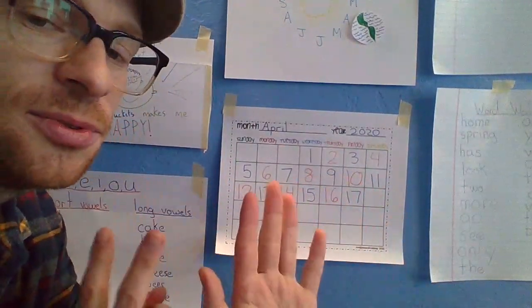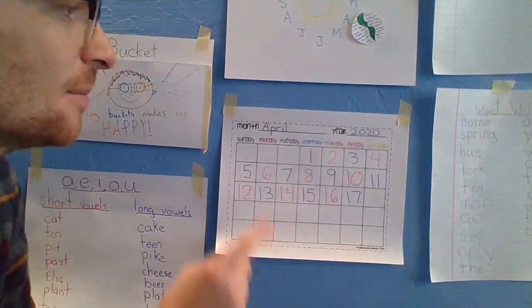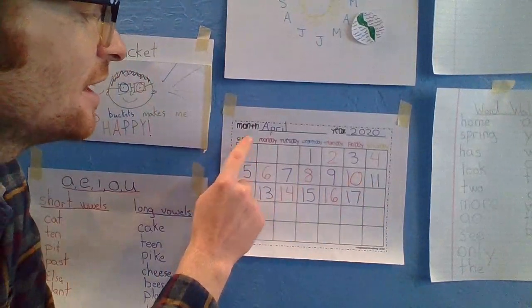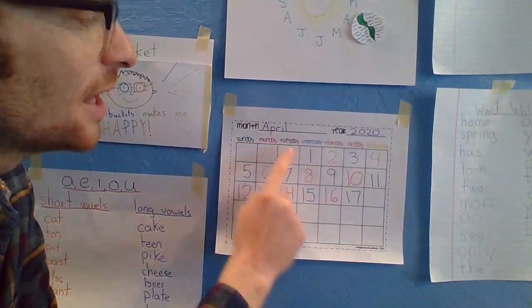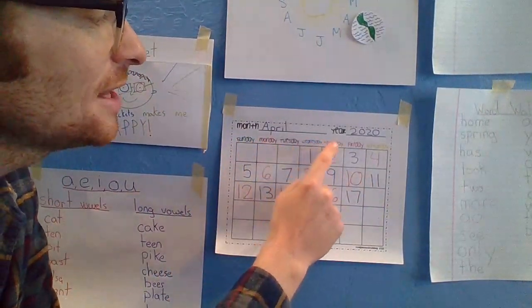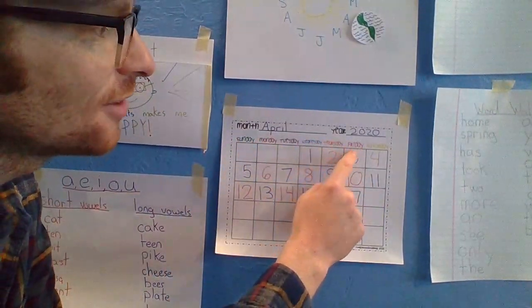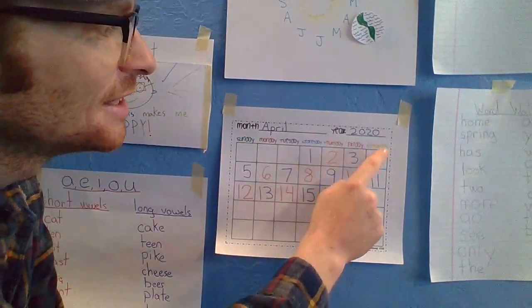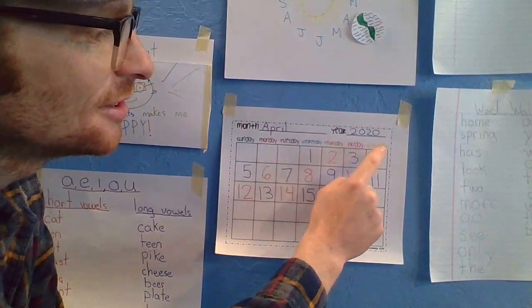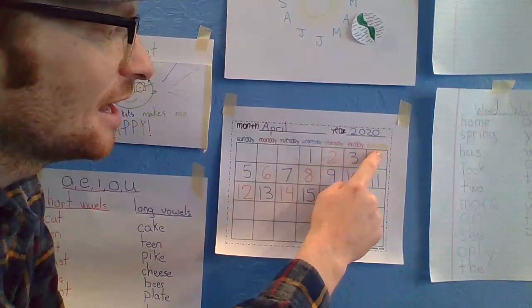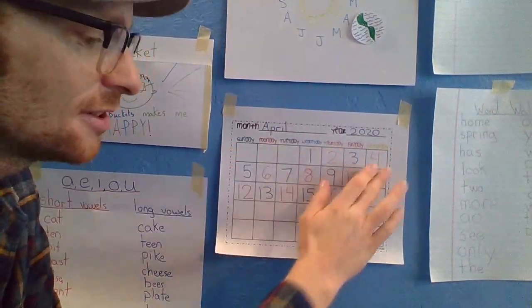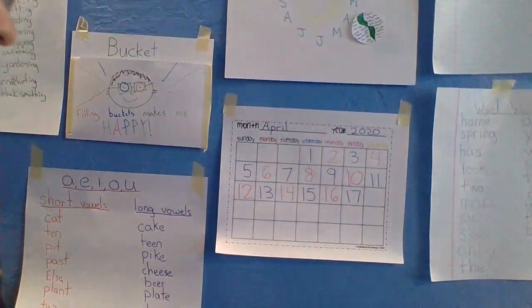See if you can sing them. Sunday, Monday, Tuesday, Wednesday, Thursday, Friday, Saturday. That's the end. Those are our seven days of the week.